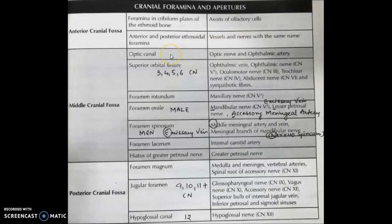Now middle cranial fossa. We have optic canal, through which optic nerve and the ophthalmic artery pass. Then we have superior orbital fissure. Through that, the cranial nerves number 3, 4, 5, 6 travel.